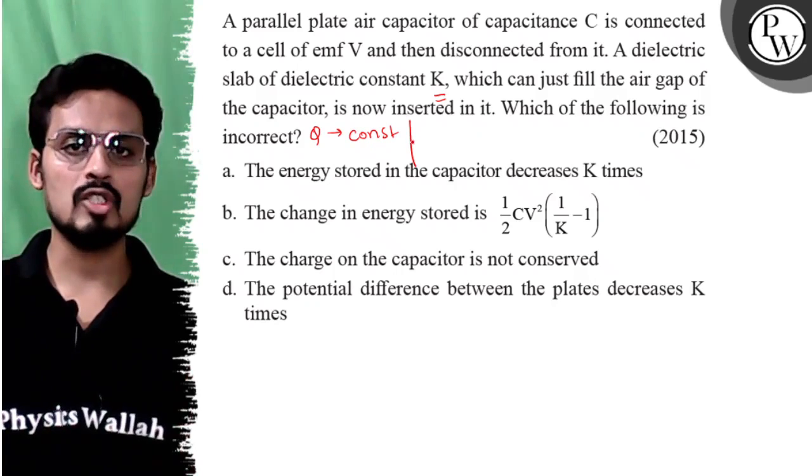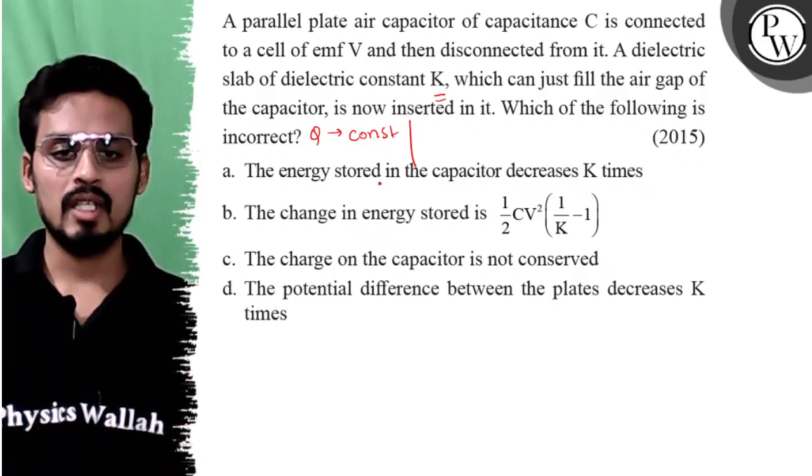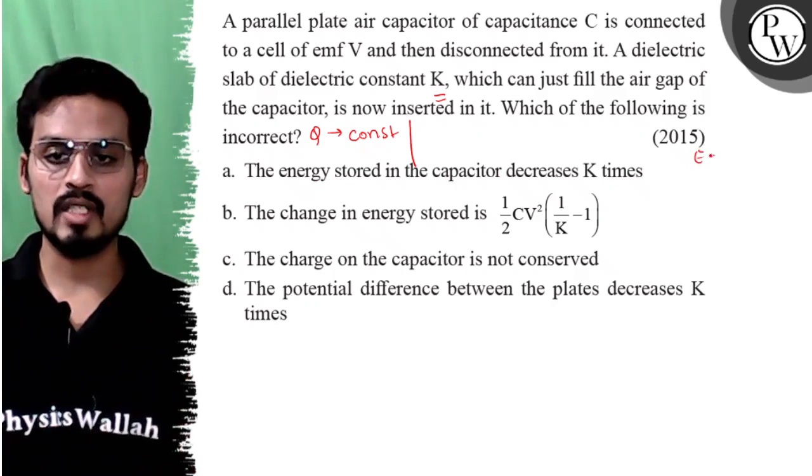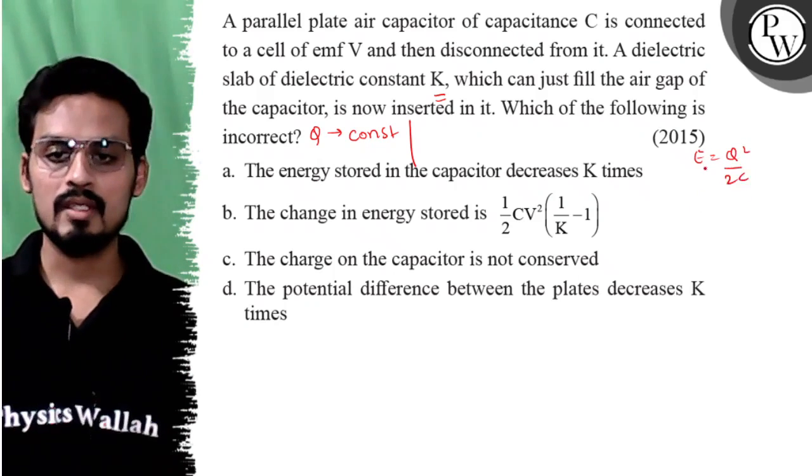Among the following, which of them is incorrect or which of them is wrong? I need to tell. The energy stored in the capacitor decreases K times. Now this needs to be calculated because we know that energy is equal to Q square upon 2C.